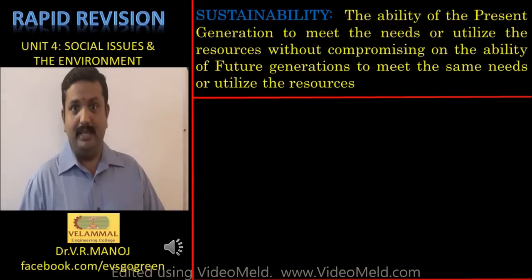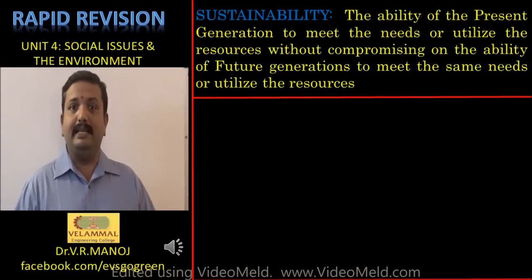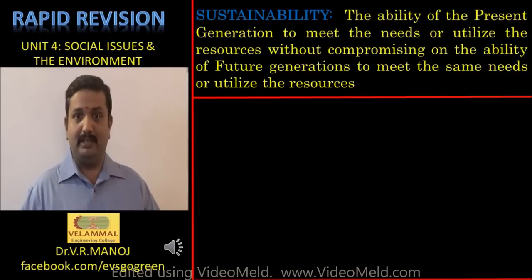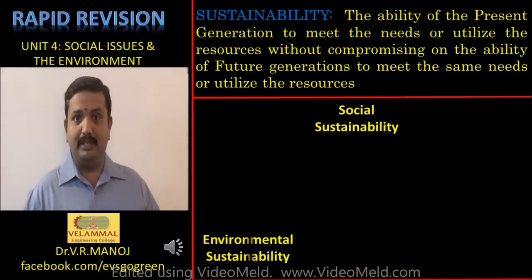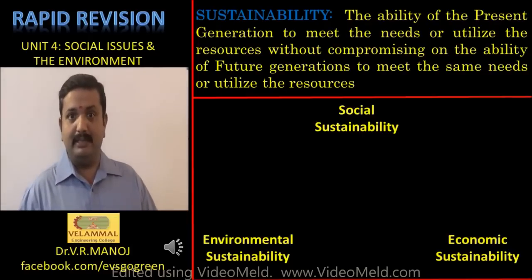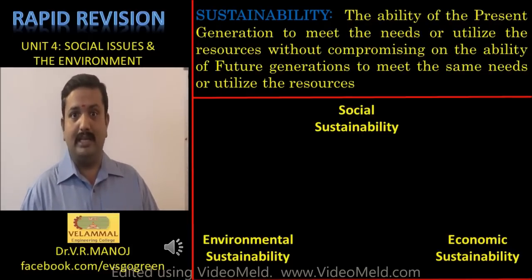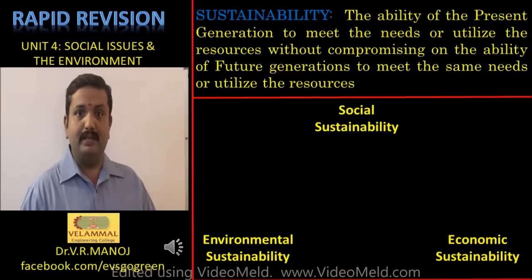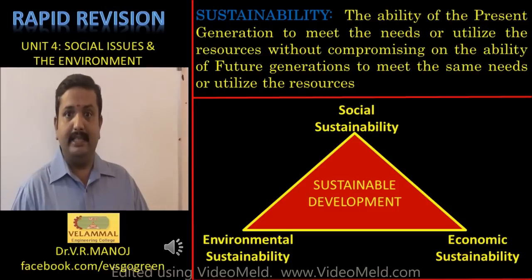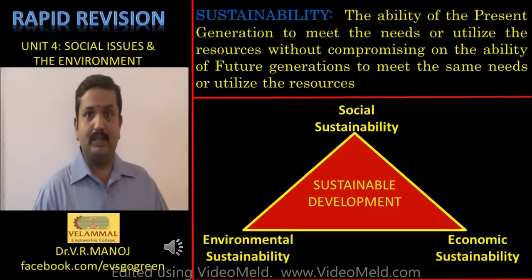There are three types of sustainability: environmental sustainability, economic sustainability, and social sustainability. You should mention these as the three pillars of sustainability. Whenever these three pillars work in conjunction with each other, they become what is called sustainable development. An answer on sustainable development will include a definition of sustainability and the three pillars of sustainability.